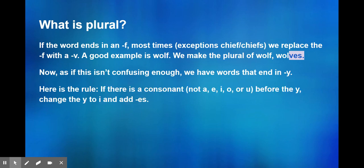If there is a consonant, so any of the 26 letters of the alphabet except for A, E, I, O, or U, if that comes before the Y, then you change the Y to I and add ES.